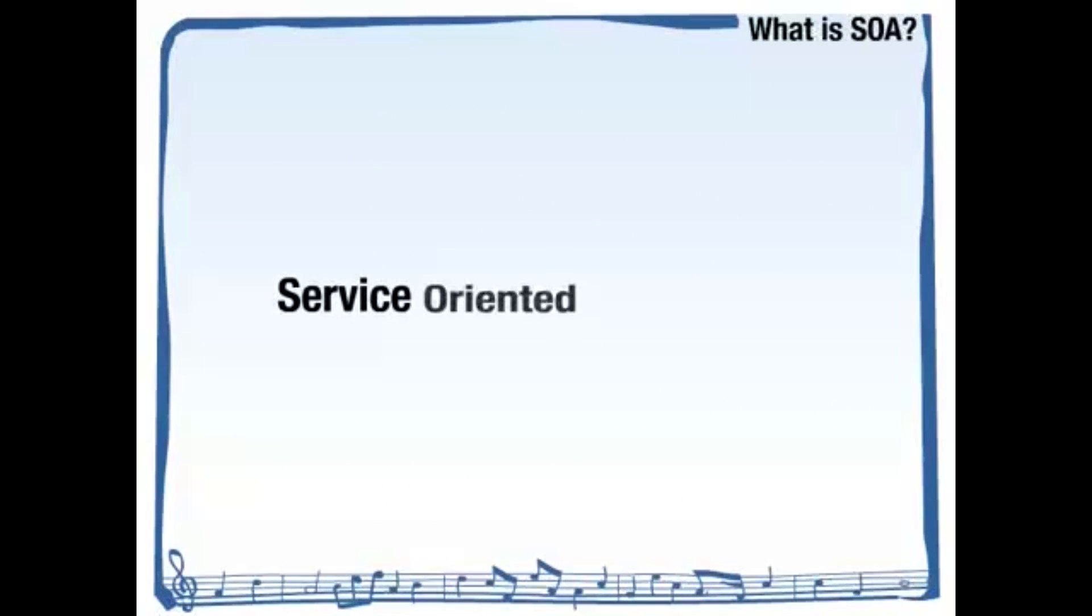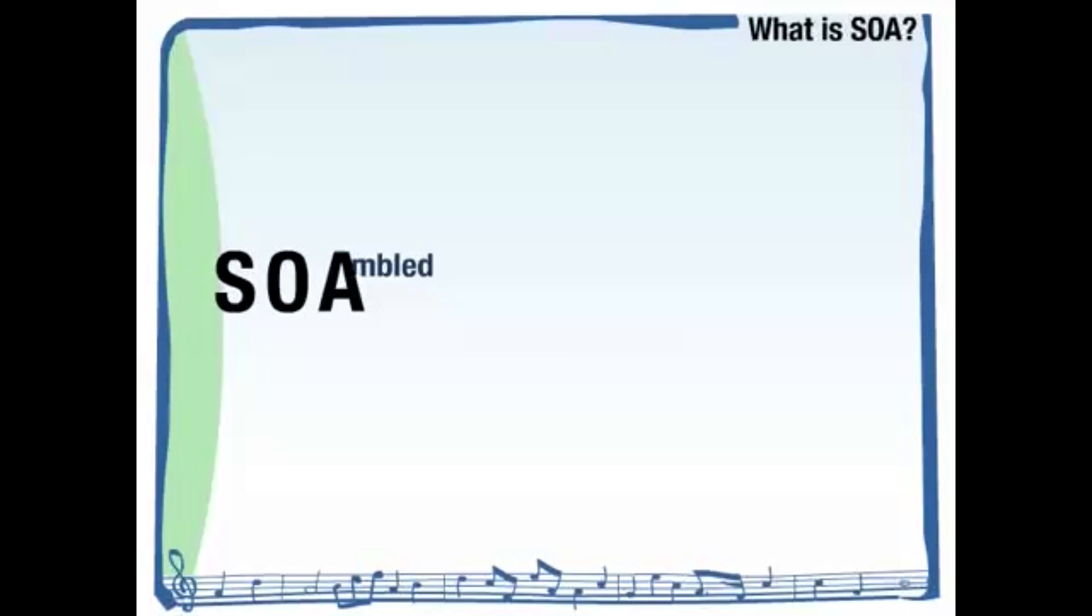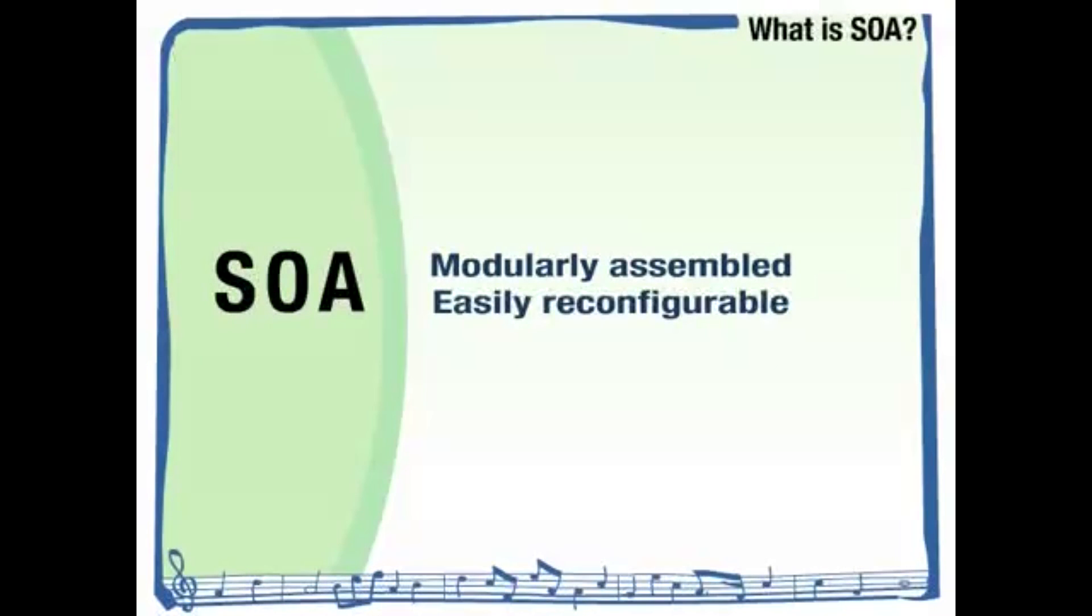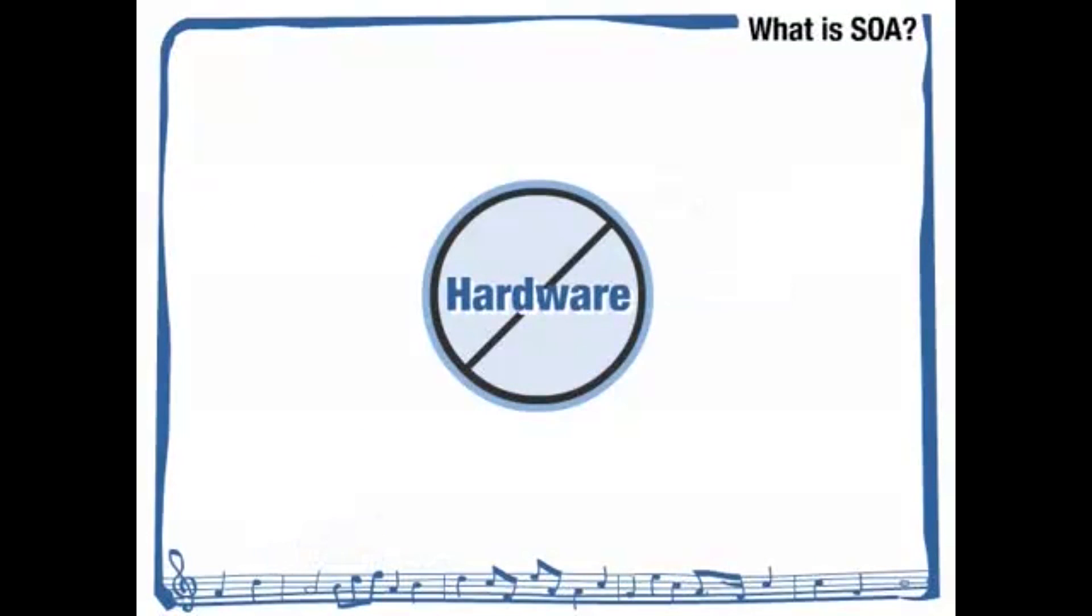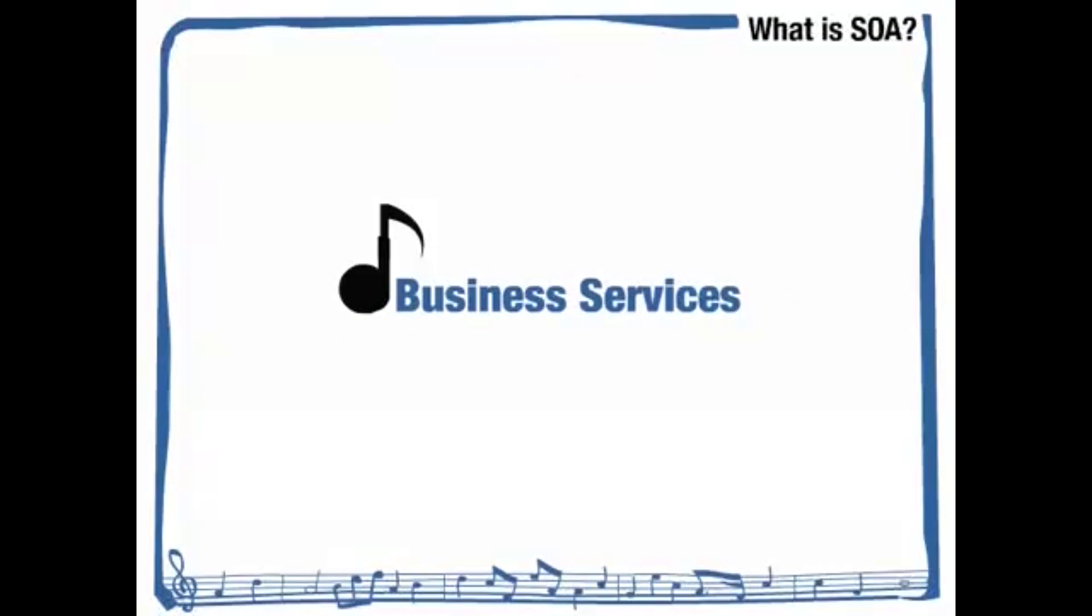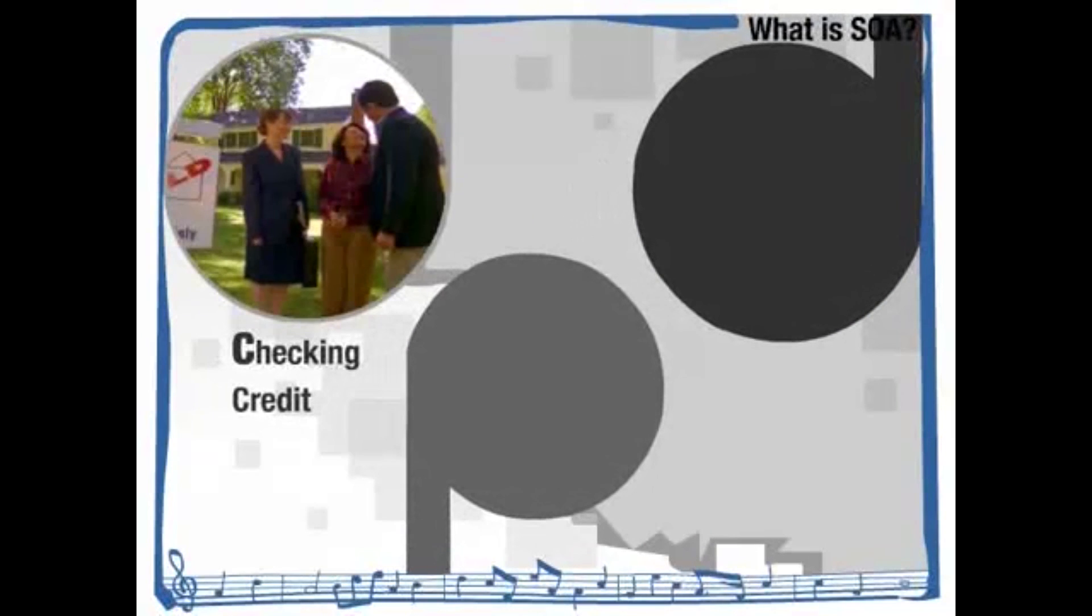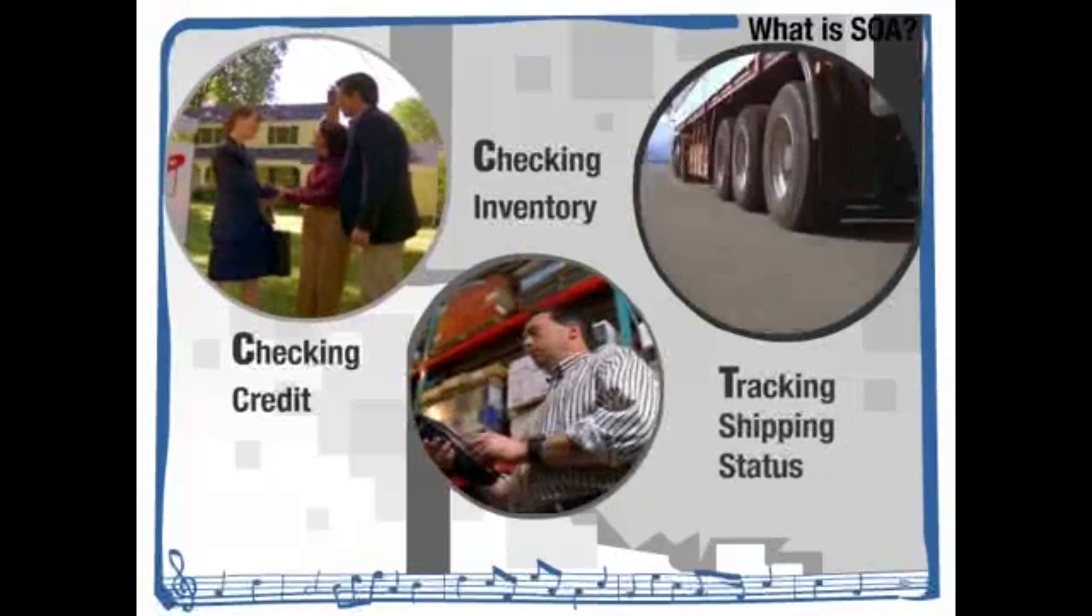With service-oriented architecture, your IT is built with modularly assembled and easily reconfigurable components, like musical notes. Think of each musical note not as a piece of software or hardware, but as a service your business performs, like checking someone's credit, checking your inventory, or tracking a shipment.